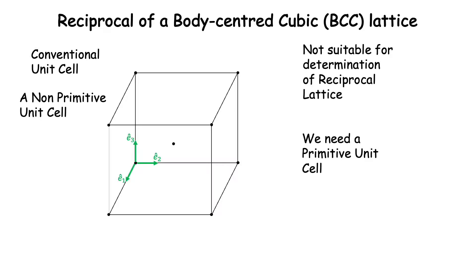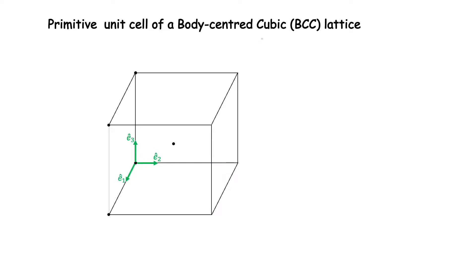We have found the primitive unit cell of BCC in another video, the link for which is in the description below. We will just give the final results obtained there. The primitive basis vectors of a BCC lattice can be found by joining the body center point to three appropriately chosen corners of the BCC unit cell. So these are a1, a2, and a3 as shown here.